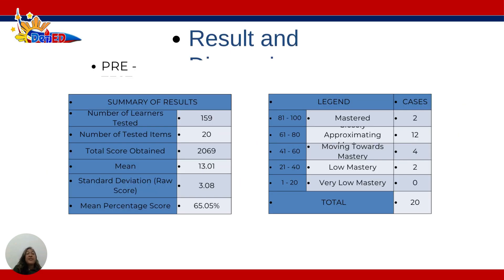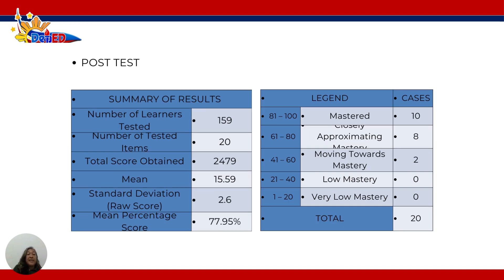Based on the results of the pre-tests, the total score obtained was 2,069, with a mean of 13.01, standard deviation of 3.08, and a mean percentage score of 65.05%. On the post-tests, the summary of results shows a total score of 2,479, a mean of 15.59, standard deviation of 2.6, and a mean percentage score of 77.95%.